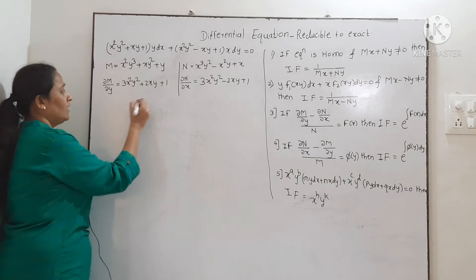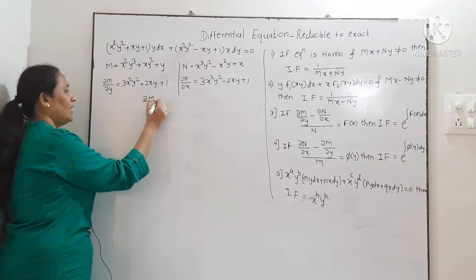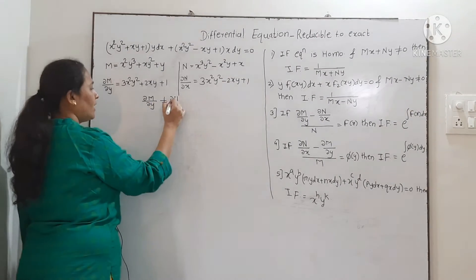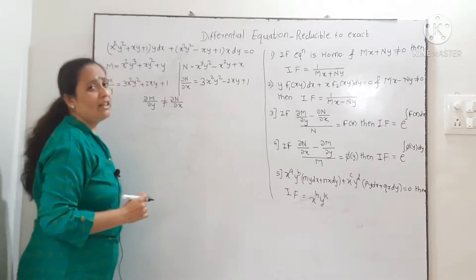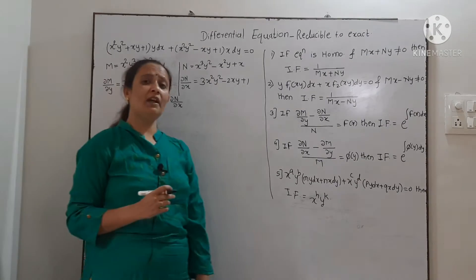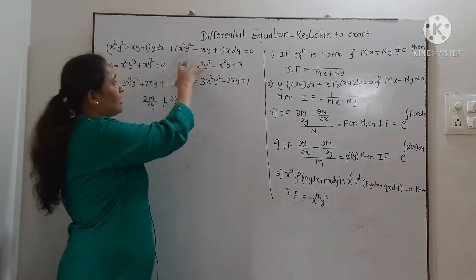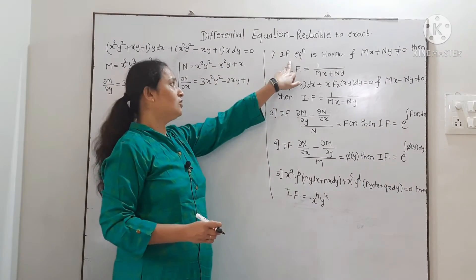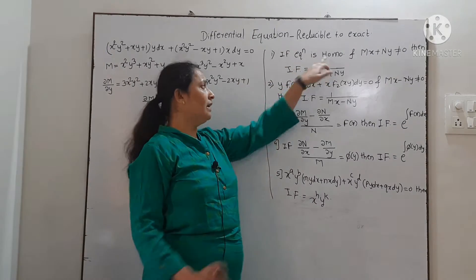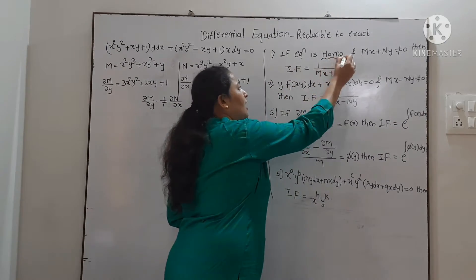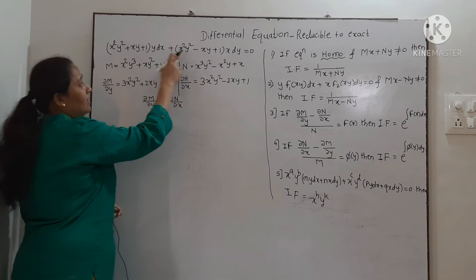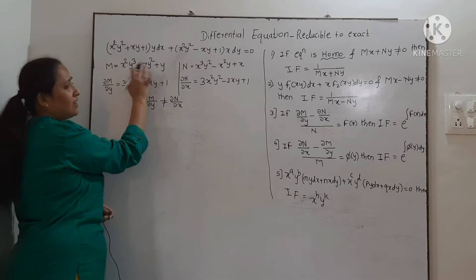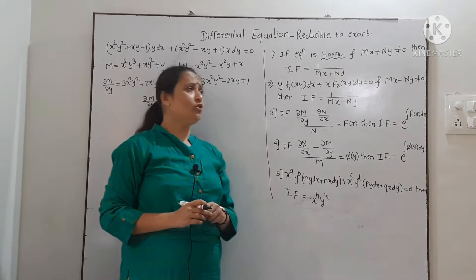Similarly, ∂N/∂x is 3x²y² − 2xy + 1. These two are not the same, so the equation is not exact; ∂M/∂y ≠ ∂N/∂x. We must find the integrating factor. Checking rule 1: the equation must be homogeneous. The degrees are 5 and 3 — not the same. So the first rule is not applicable. Then we check the second rule.